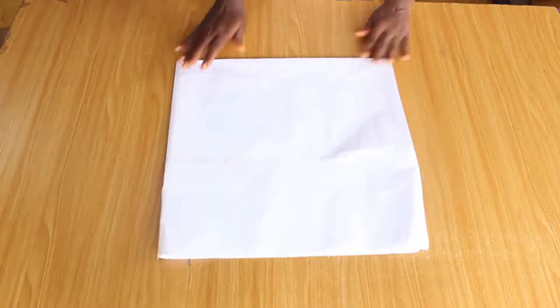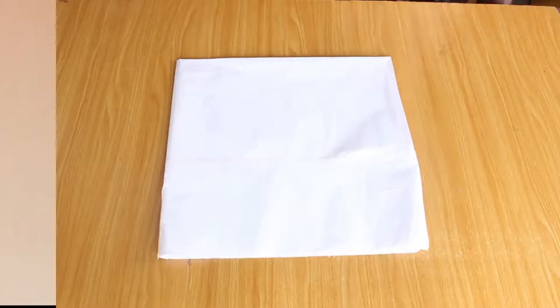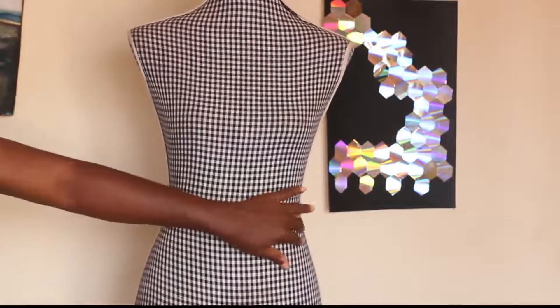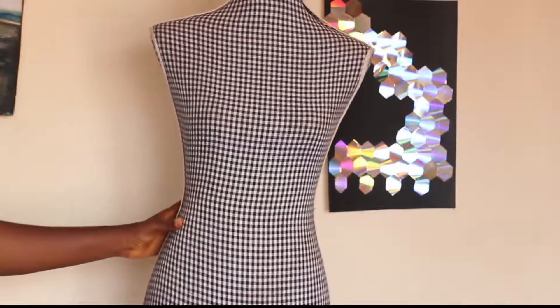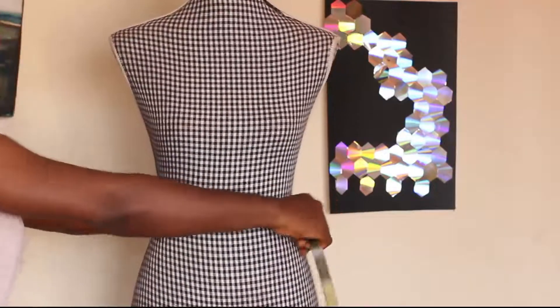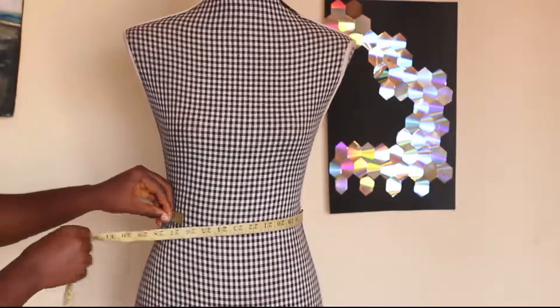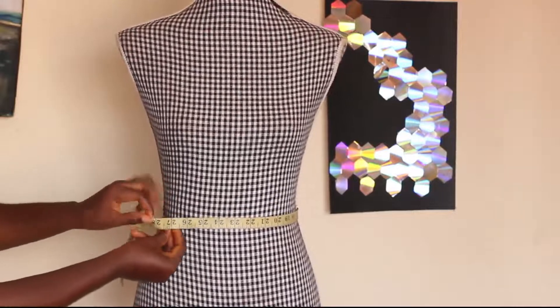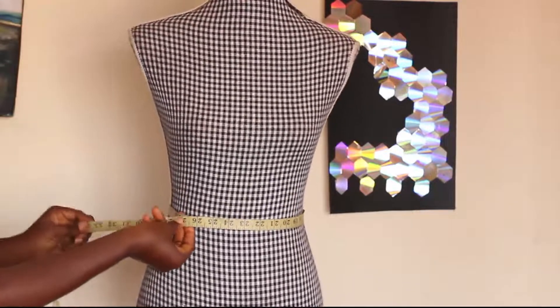What we need is to find the radius of the skirt. To find the radius, I'm going to take my waist measurement first before we go into other calculations. I have my mannequin right here. I'm going to locate the tiniest part of this mannequin, put my tape around, and take my waist measurement. Make sure you have two fingers inside and then you're good to go.